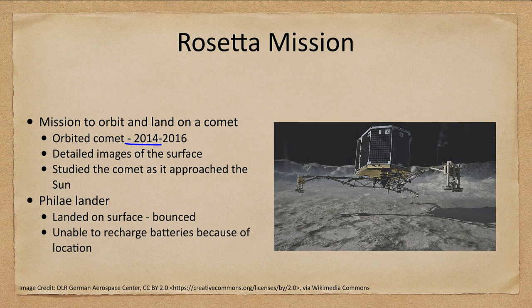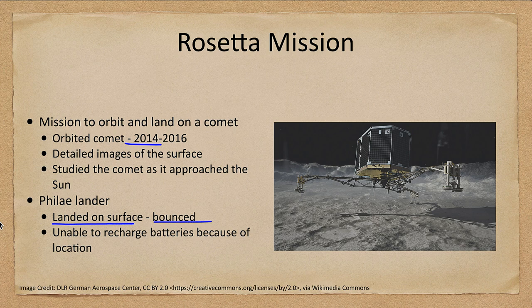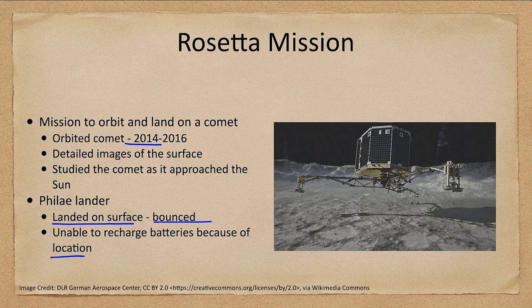Rosetta also brought a lander to land on the surface, which did land but unfortunately bounced into a shady area and was not able to recharge its solar cells, so it only obtained a limited amount of information. The very low gravity of the comet made it very difficult to land easily, and the harpoon system intended to anchor it did not work correctly, leaving it unable to recharge its batteries and provide all the information hoped for.